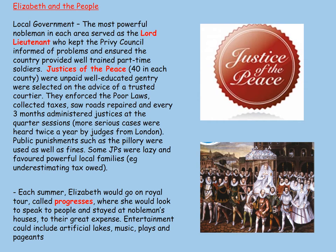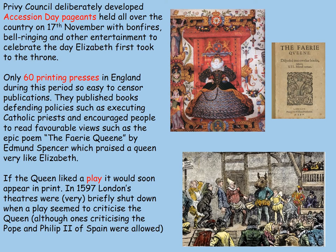Elizabeth went around the country each year on tours known as Progresses — she'd speak to people and stay at noblemen's houses at huge expense to the host, with very lavish entertainment often costing the local lord a great deal. She continually reinforced power through accession day pageants all over the country — great bonfires, great celebrating. She used government control of the 60 printing presses to censor publications, suppress those about Catholic priests, and publish favourable reviews — for example, The Faerie Queene, which praised a queen very much like Elizabeth. She was a great fan of plays, briefly shut down theatres when they criticised the Queen, but plays criticising the Pope and Philip II of Spain were encouraged.